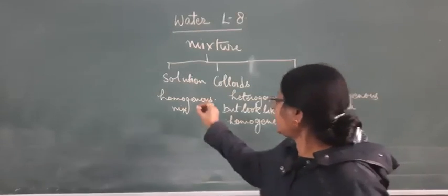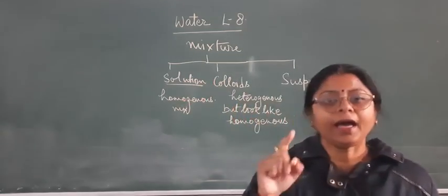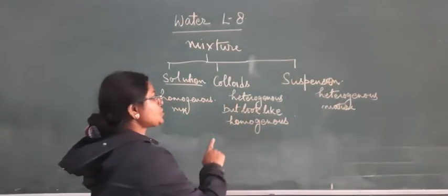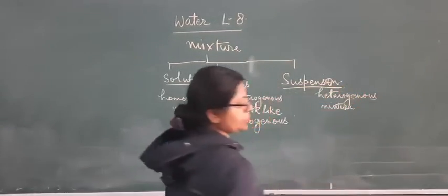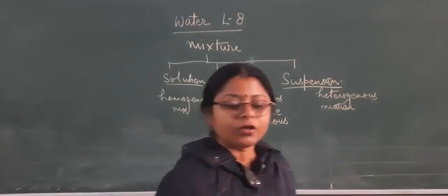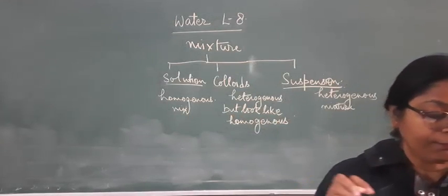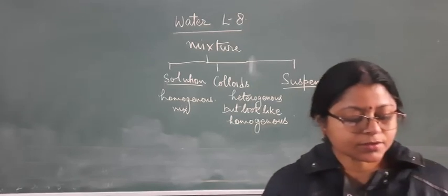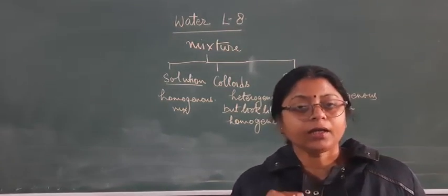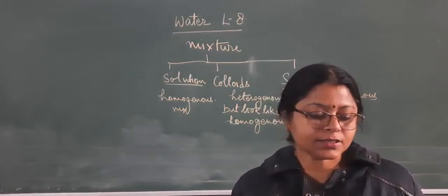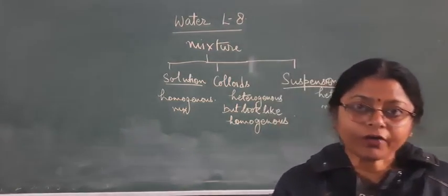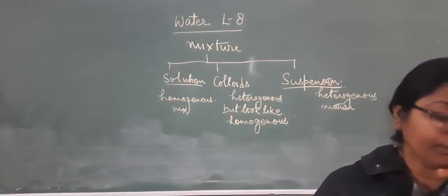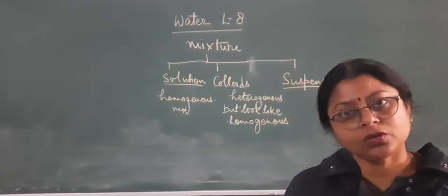A solution is a homogeneous mixture and each solution has two parts: solute and solvent. A suspension is a heterogeneous mixture in which we can mix the solute, but the solute particles are larger in size compared to the solvent molecules. That is why they do not dissolve but remain suspended throughout the solution.